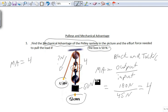So what does that mean? If the weight is 50 newtons and the MA is 4, the effort force would be 50 divided by 4, which is 12.5 newtons. So we'd only pull with 12.5 newtons.